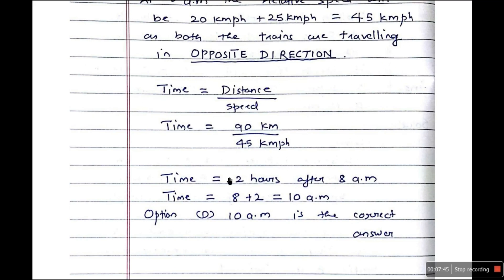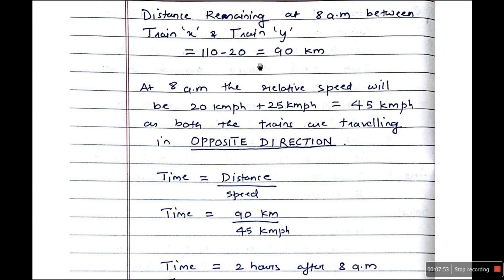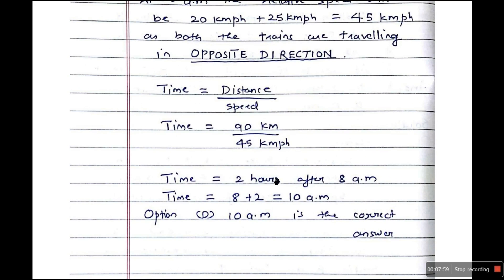The time is 2 hours after 8 am. Don't get confused — this 2 hours is the time after 8 am, not from 7 am. So 8 plus 2 equals 10 am. Option D is the correct answer: both trains will meet at 10 am.